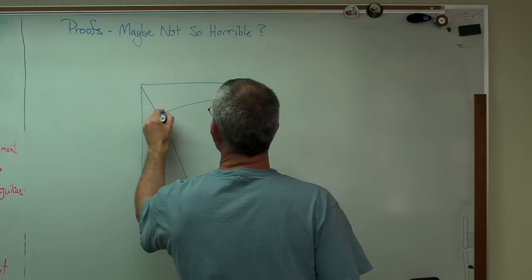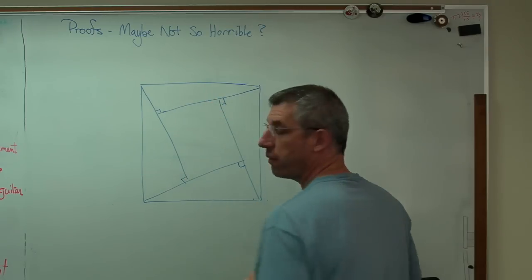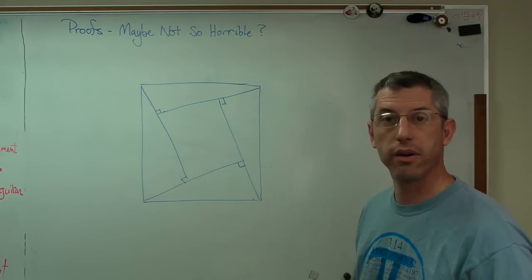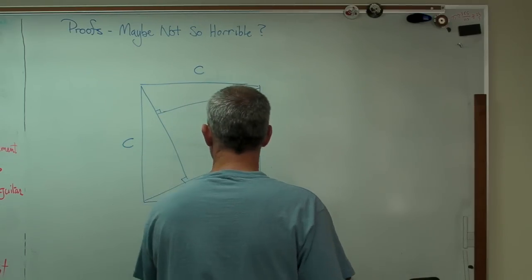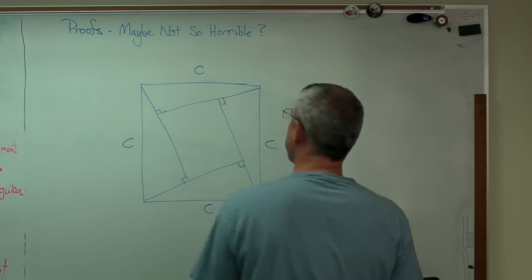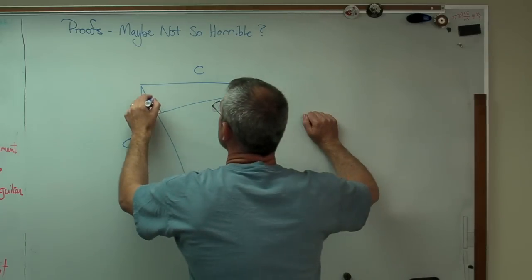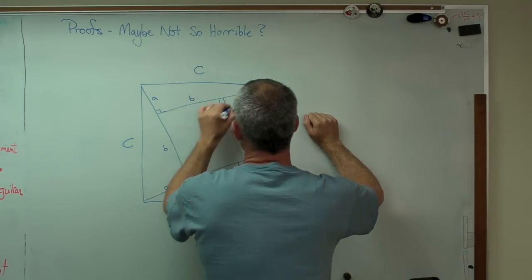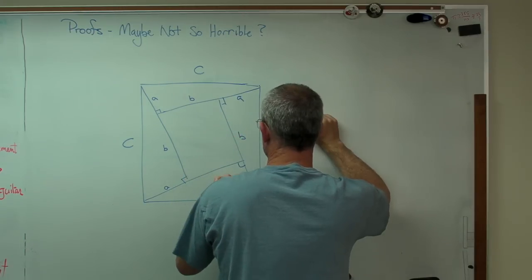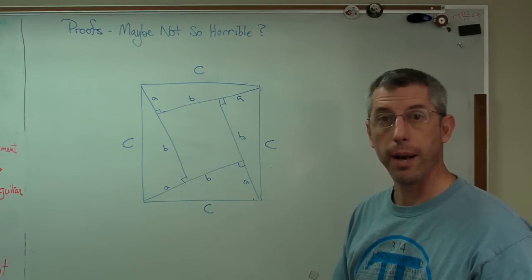Now I don't have this drawn very accurately, but let's say that these are all identical right triangles. So that's a right angle, that's a right angle, that's a right angle, and that's a right angle. It makes this kind of nice pattern. Let's also say that these right triangles also have sides of lengths A, B, and C. So there's side A, there's B, that one's an A, B, A, B, A, B. I think I got that right.